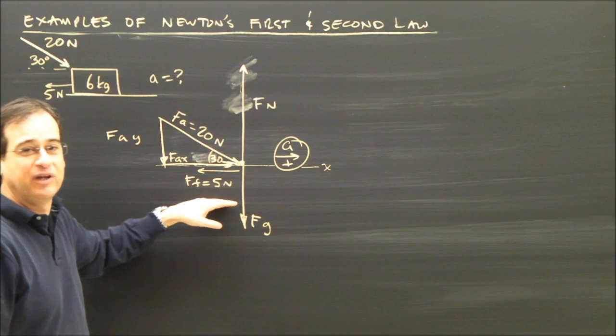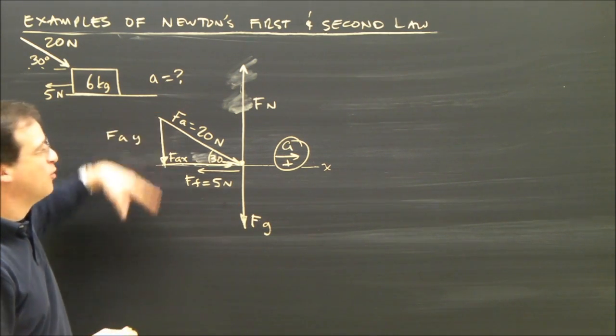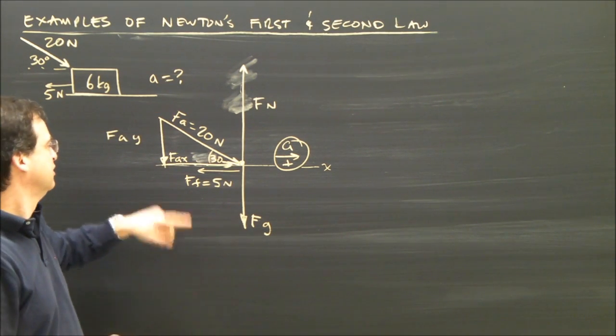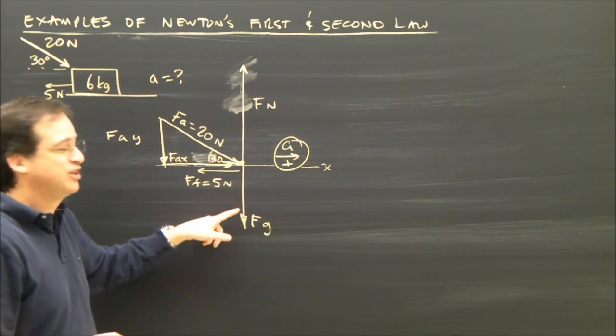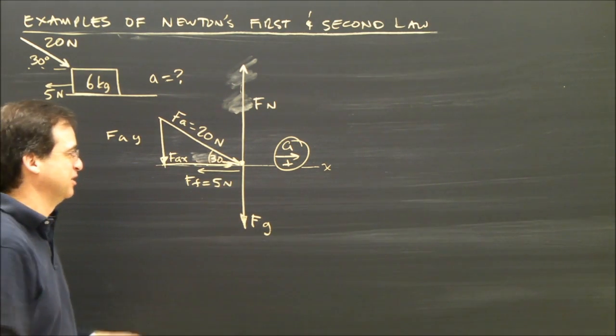Again, Fn is not equal to Fg. That only happens if there's no other forces in the up and down direction. But I have a force in the down direction—it affects the size of Fn. Fg isn't going to change because it's gravity. That doesn't really change.